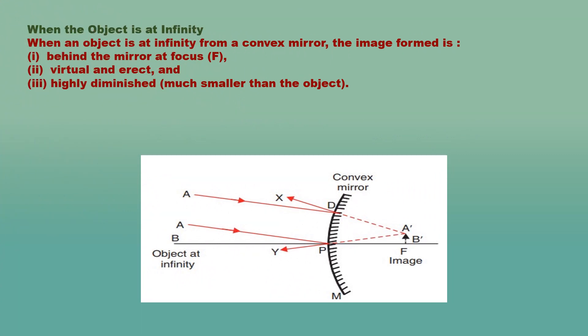Case 2: when the object is at infinity in front of a convex mirror. Since the object is very far off, the two rays AD and AP from its top point A are parallel to one another but at an angle to the principal axis. Ray AD is reflected in direction DX and ray AP is reflected in direction PY. When the diverging reflected rays DX and PY are produced backwards, they intersect at point A′ in the focal plane of the convex mirror. Thus A′ is the image of the top point A of the object.